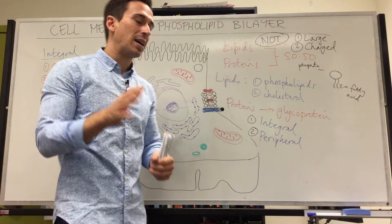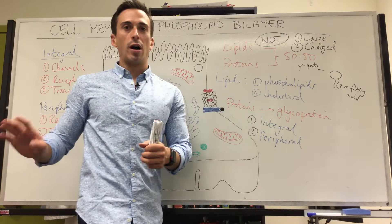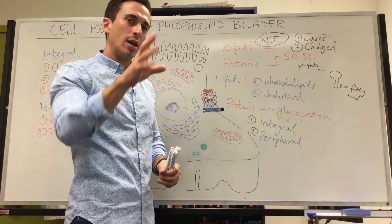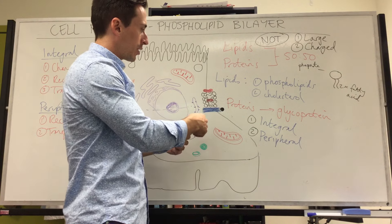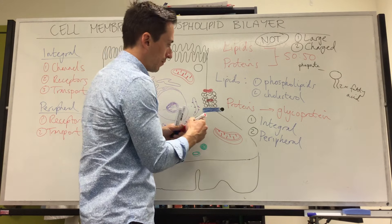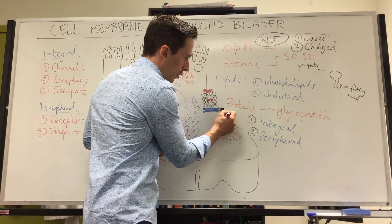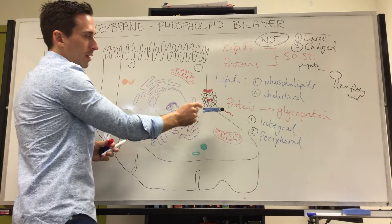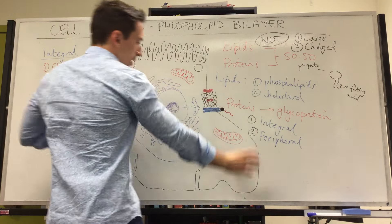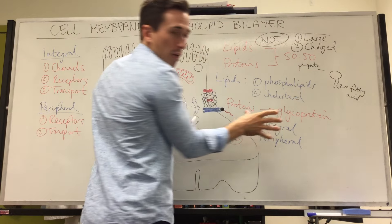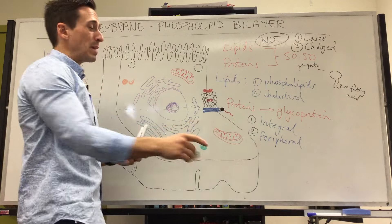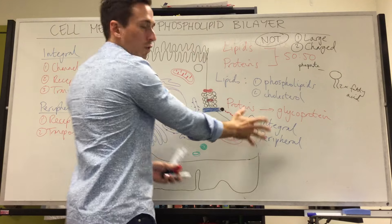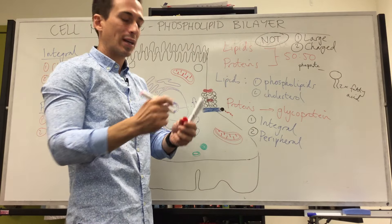The last thing to discuss is the glycocalyx. A lot of these proteins have a sugar or carbohydrate attached to them, and this sugar is attached to the very end of the protein on the outside of the cell. If 50% of this plasma membrane is proteins and they're predominantly glycoproteins, the outside of this plasma membrane is going to be covered by sugar molecules dangling off the ends like a fuzzy border. That's called the glycocalyx.